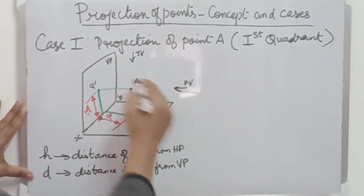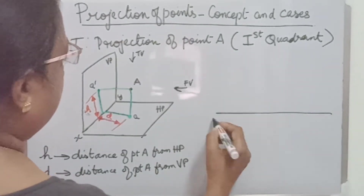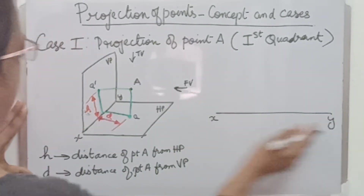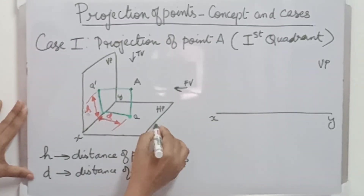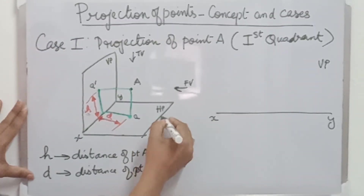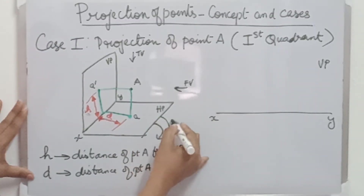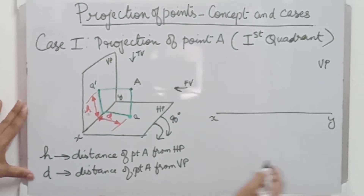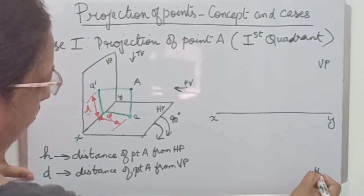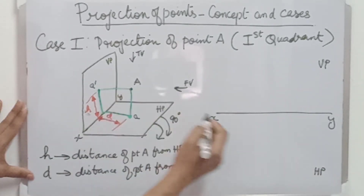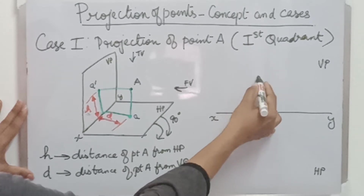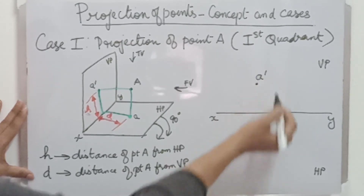Now let me draw the projection for that. First, draw the XY line — above that is VP. For HP, we need to rotate the horizontal plane 90 degrees, so the region below the XY line will be HP.